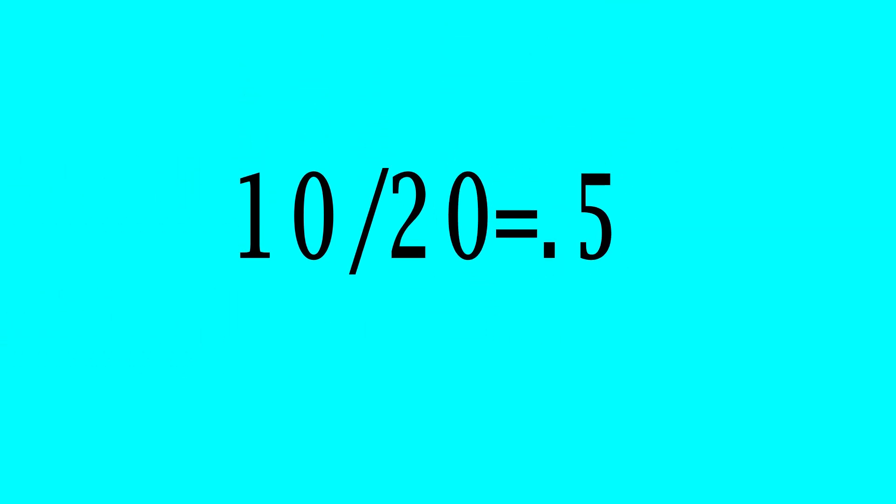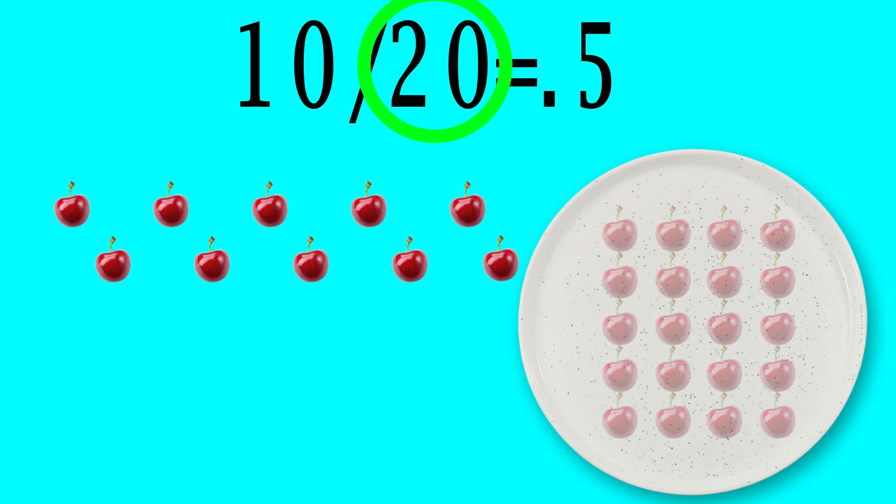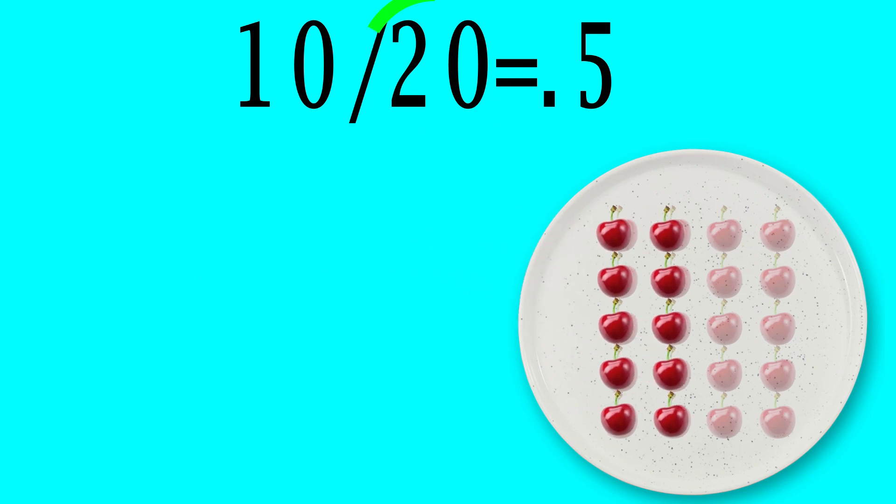Going the other way, 10 divided by 20 equals 0.5. This is because if we have 10 cherries, and we want 20 of them on each plate, how many plates are we able to fill up? Well, just half of one. We would have needed 20 cherries to even fill up a single plate with our desired 20 cherries per plate. We only have 10, so we can get it halfway there, 0.5.